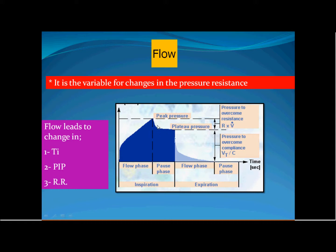The flow determines the pressure resistance during inspiration, not expiration. It also determines the delivery time of the preset tidal volume. Increasing the flow decreases the inspiratory time needed to deliver the tidal volume, while decreasing the flow increases the inspiratory time. Accordingly, increasing flow increases peak inspiratory pressure via pressure resistance, and decreasing flow decreases peak inspiratory pressure.